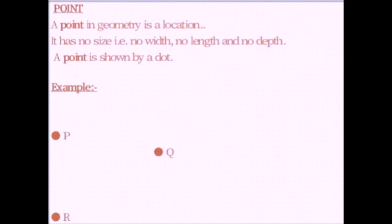We will start with point. What is a point? A point in geometry is a location. It has no size, no width, no length, no depth. A point is shown by a dot.